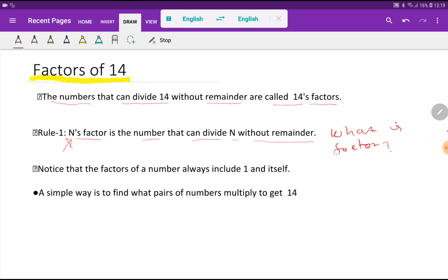Look at here. The factors of a number always include 1 and itself. So the factor of 14 will be 1 and itself means 14. We have easy way to find out factors. A simple way is to find out what pairs of numbers multiply to get 14.